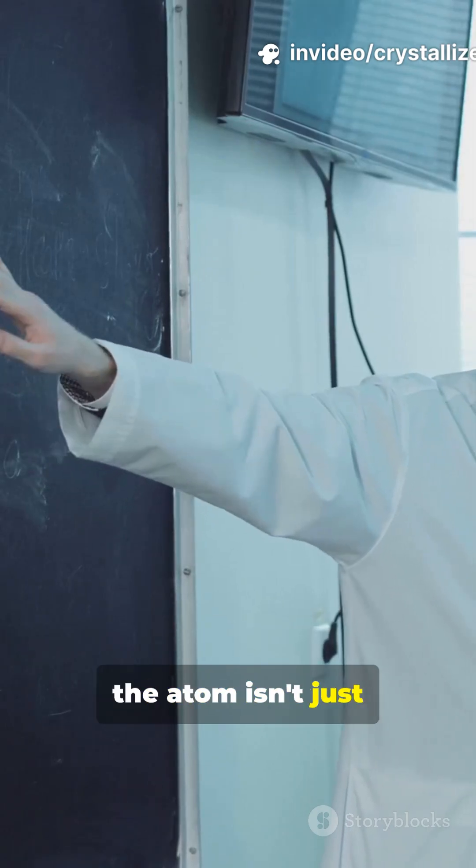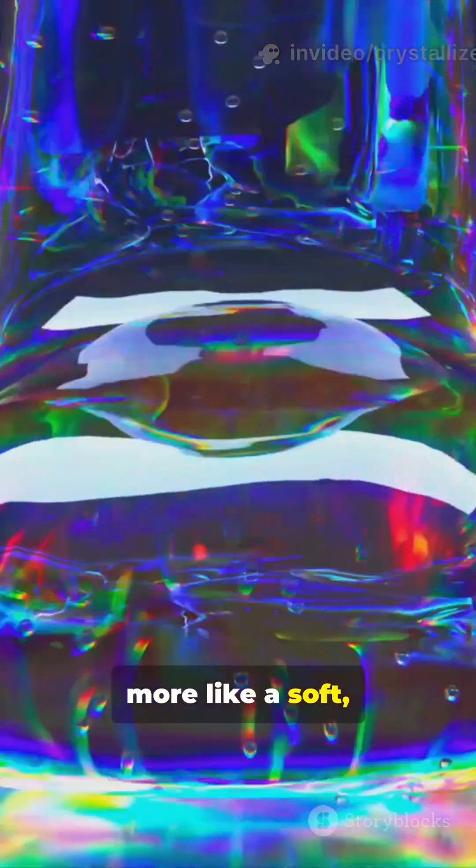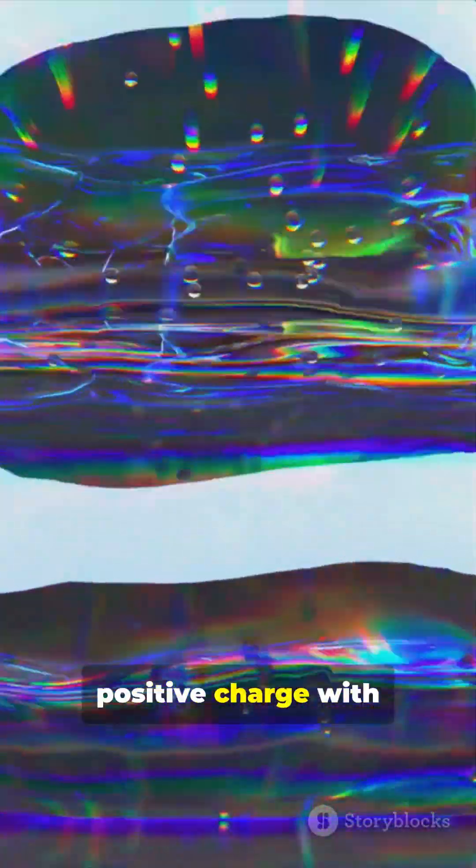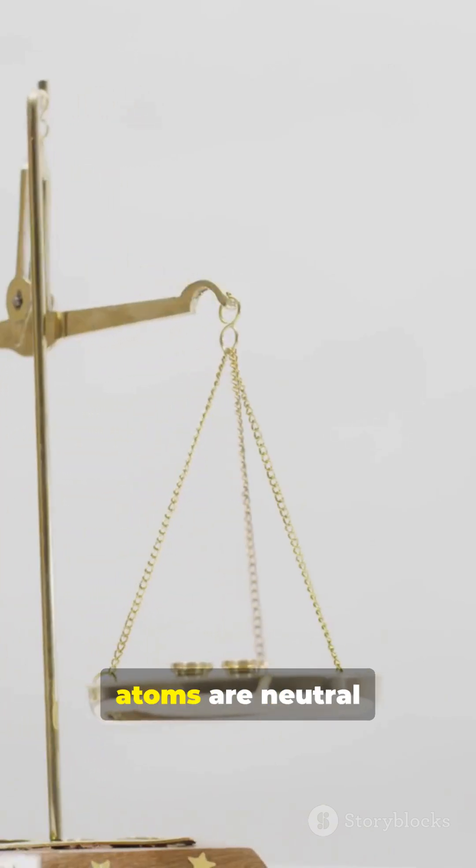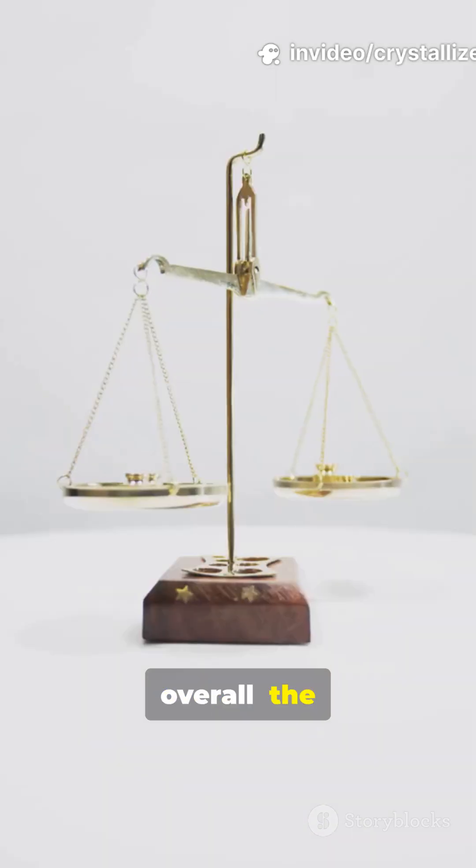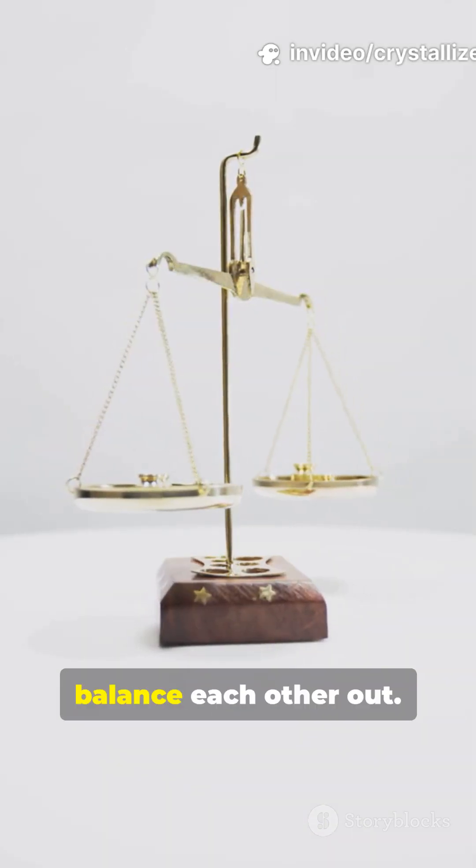So in this model, the atom isn't just a hard ball. It's more like a soft, squishy mix of positive charge with little negative bits floating inside. It explained why atoms are neutral overall. The positive and negative charges balance each other out.